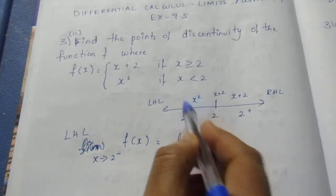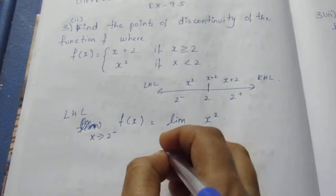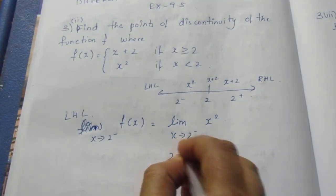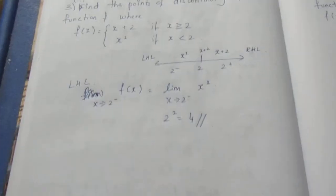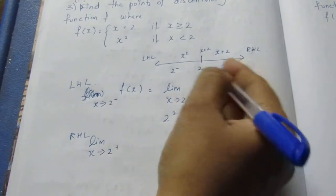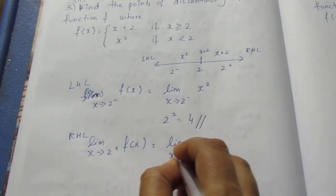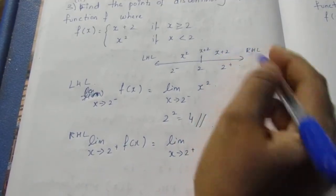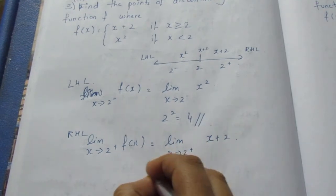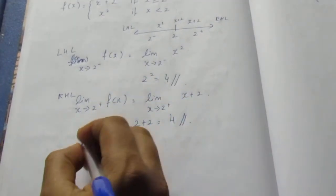We evaluate x squared and x plus 2 by substituting x equals 2. For the left-hand limit using x squared: 2 squared equals 4. So the left-hand limit is 4.